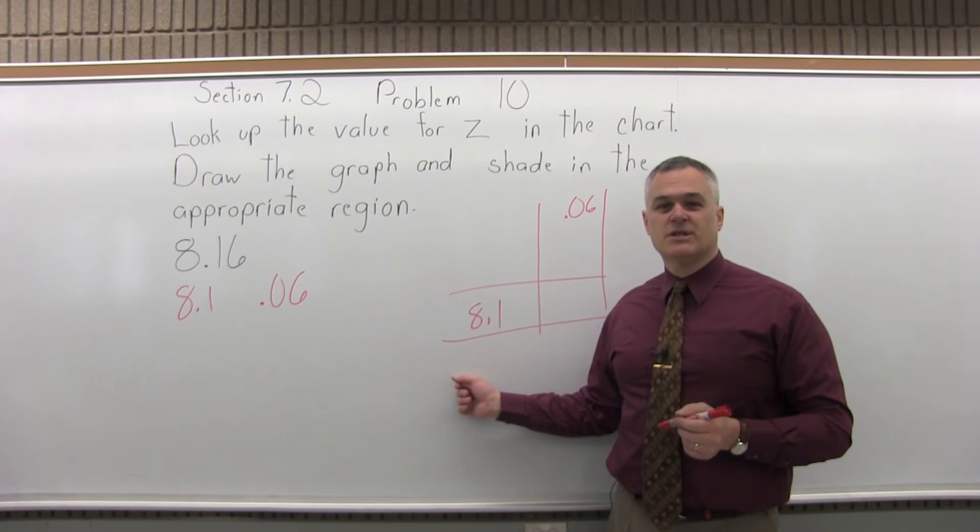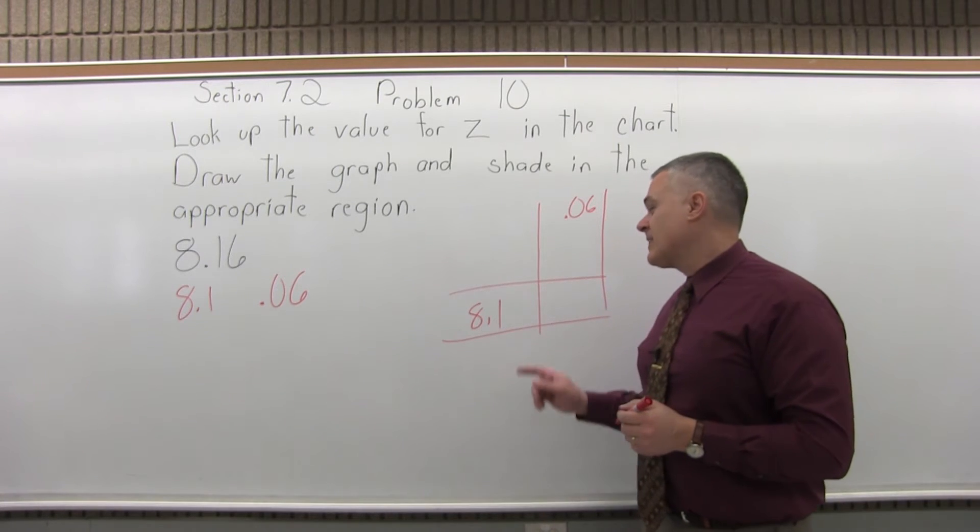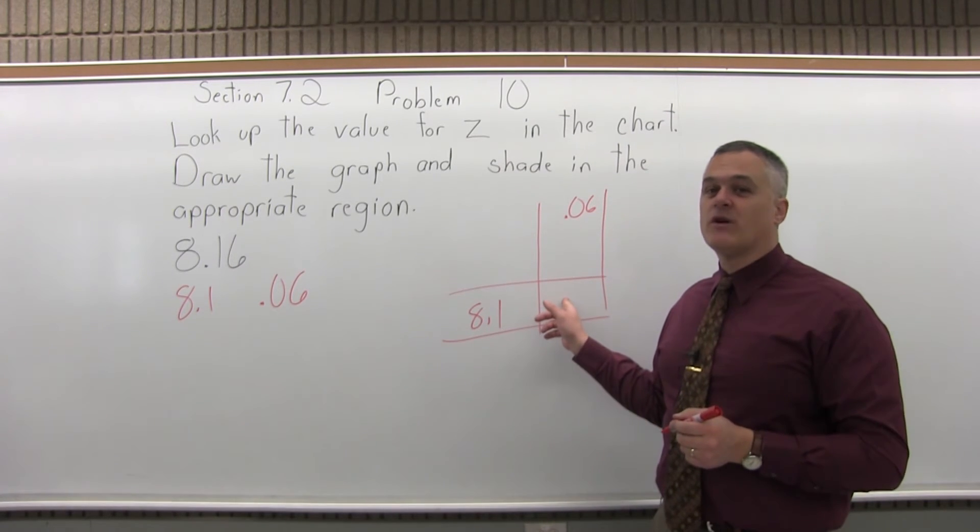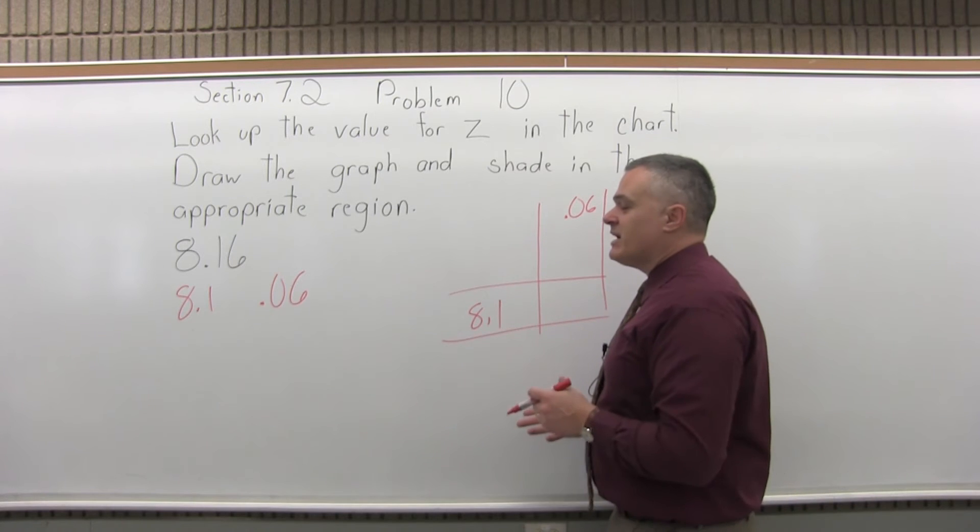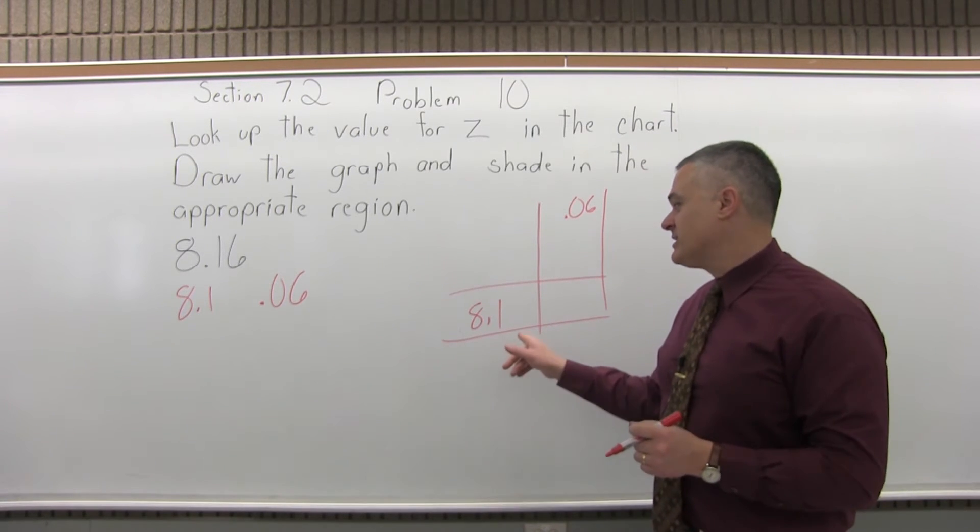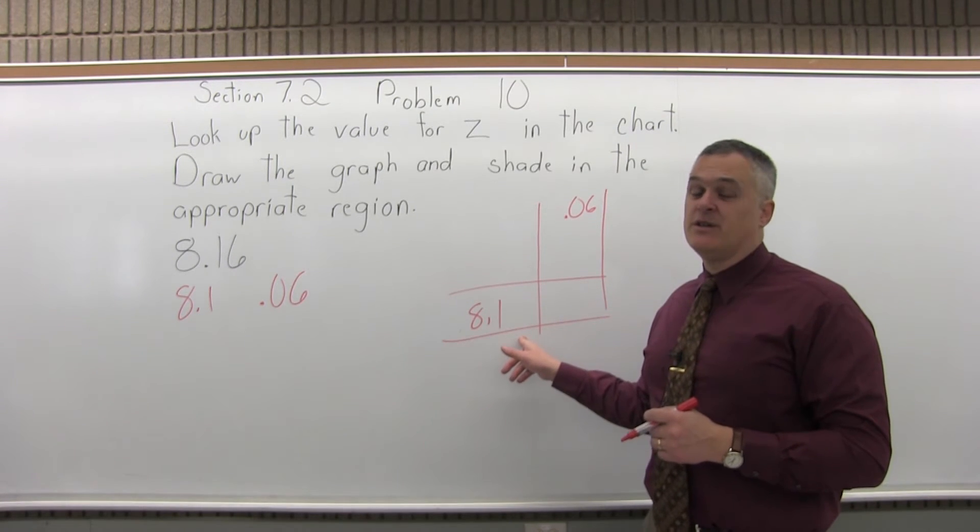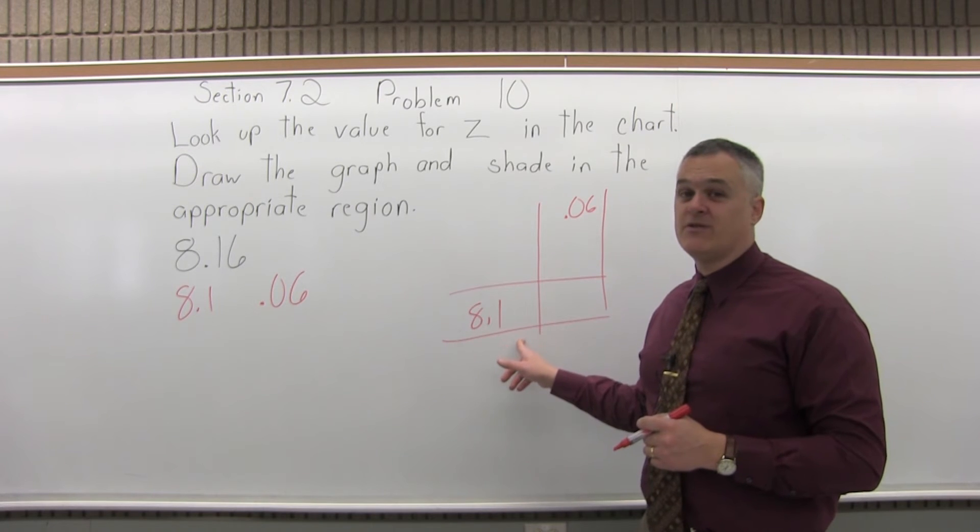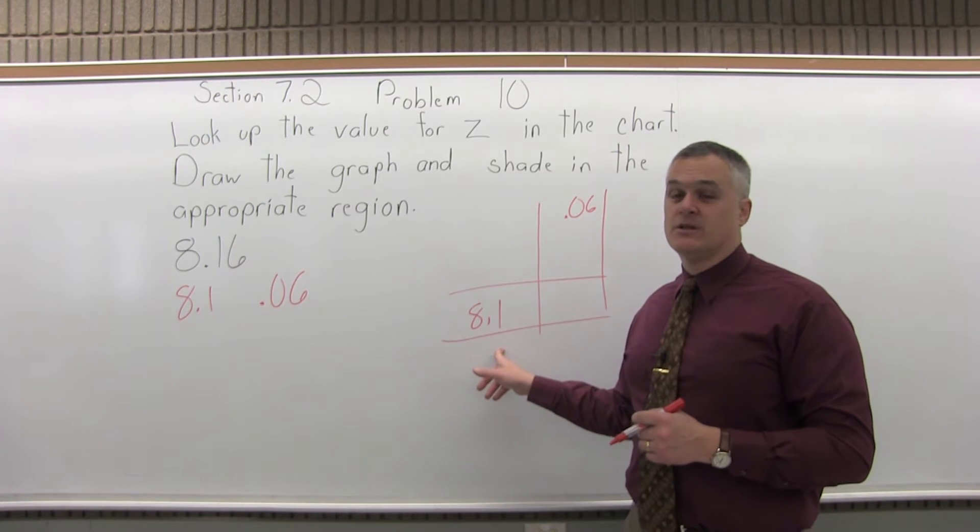So what do we do with this? Well, we've gone off the chart. So anytime you go off the chart, on the positive end when you go off the chart, the answer is 1. On the negative end when you go off the chart, the answer is 0.